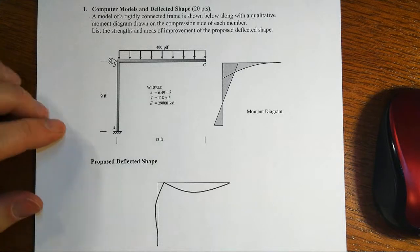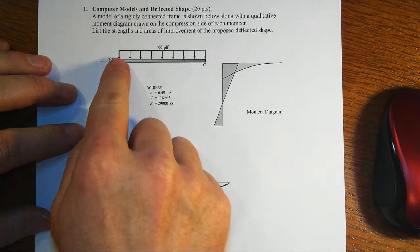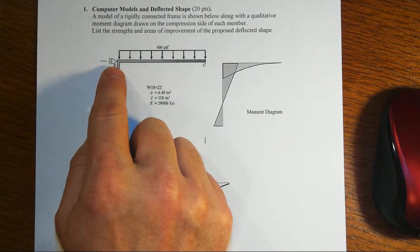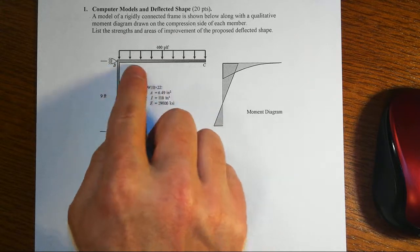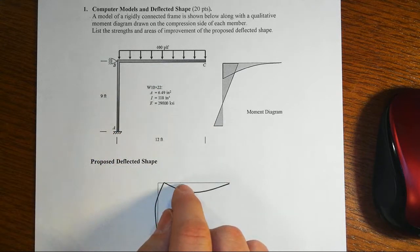In this first item we're given a frame that has a fixed end at the left and then it has a pin support up at the top at the beam column joint, and then the beam just cantilevers out from there. It supports 400 pounds per foot.